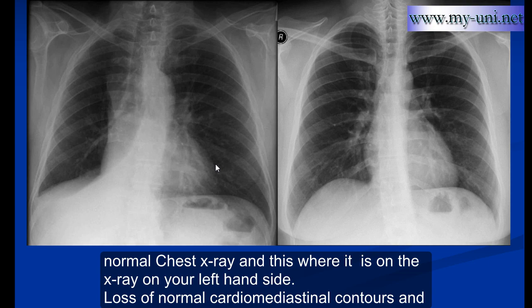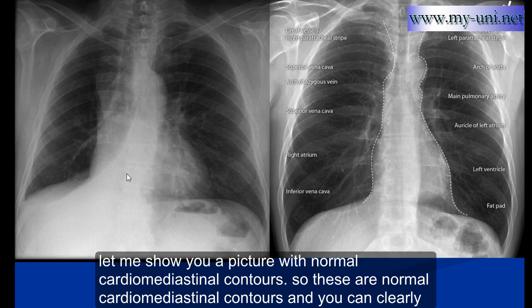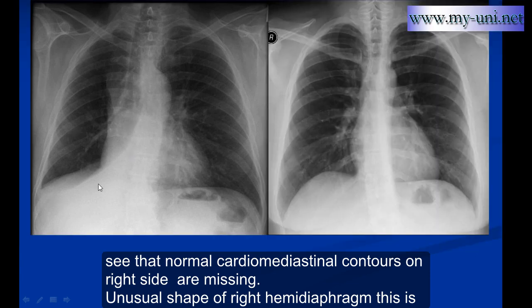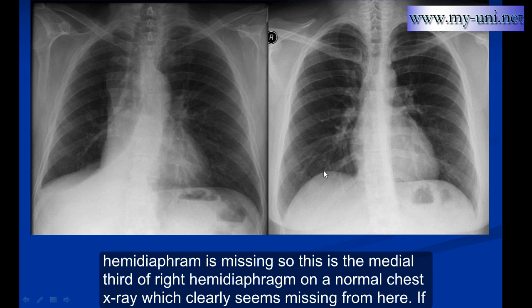Loss of normal cardiomediational contours. Let me show you a picture with normal cardiomediational contours — you can clearly see that the normal cardiomediational contours on the right side are missing. Unusual shape of the right hemidiaphragm. This is the left hemidiaphragm and this is the right hemidiaphragm. And if it really is the right hemidiaphragm, then the medial third of the right hemidiaphragm is missing — which is clearly present on a normal chest x-ray.